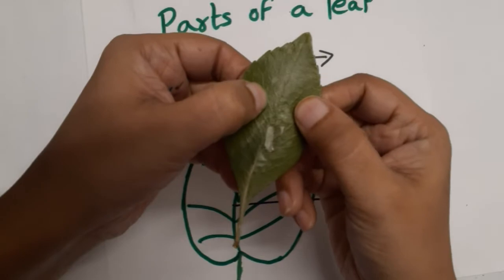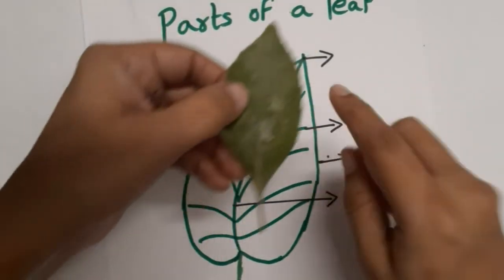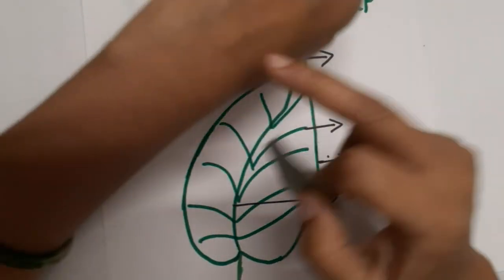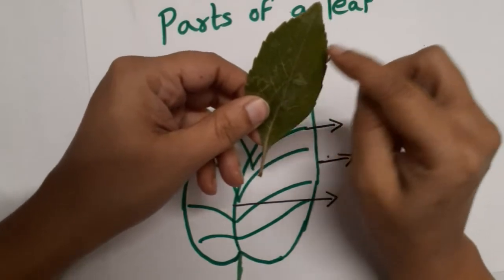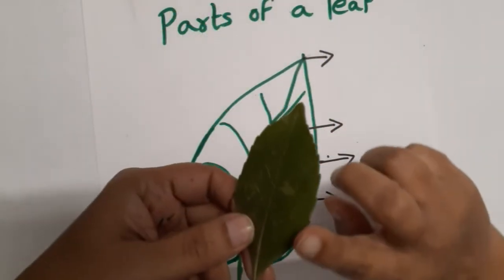Then you have these lines on either side. These lines are called veins. Like how we have veins, the leaf also has veins that run from the center to the edges.